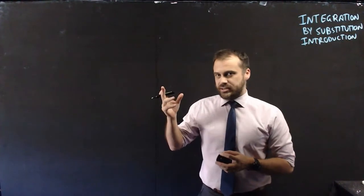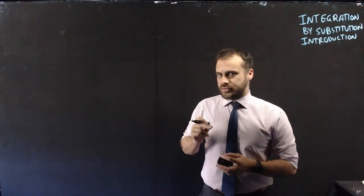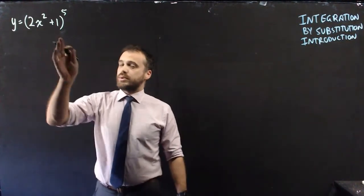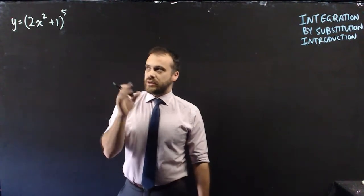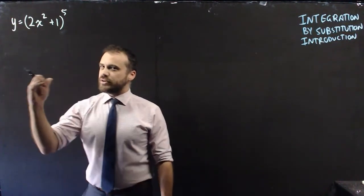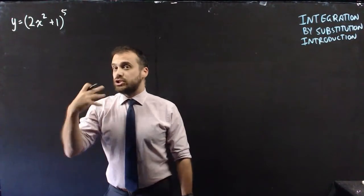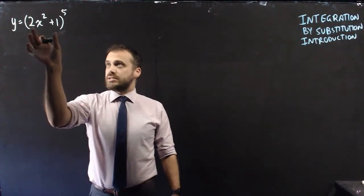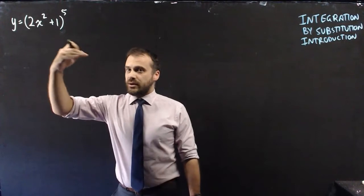To do that we need to step back and do a derivative first. Here's a function y equals (2x² + 1)^5. You should recognize that if you wanted to find the derivative of this you would have to use the chain rule. You would need to let this equal u and then work from there.